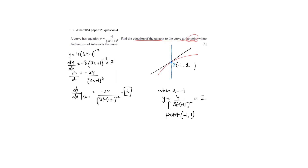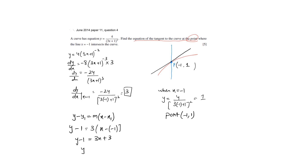Now you need to find the equation of the tangent. The equation of the tangent is in the form y minus y1 equals m times (x minus x1). So y minus y1, the gradient is 3, x minus x1. This gives y minus y1 equal to 3x plus 3. So y equals 3x plus 4 is the equation of the tangent that passes through this point.